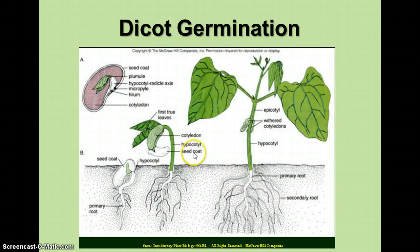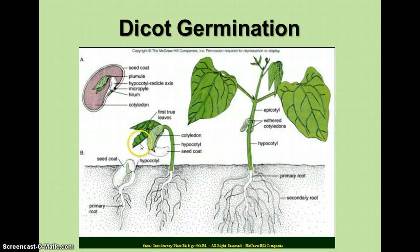In dicot germination, it's a little different. The dicot embryo has two seed leaves. The cotyledon is the large part of the seed — this is showing a bean seed. When it breaks out of the seed coat, you see the seed coat left in the ground, and then the cotyledons are here nourishing the first true leaves of the plant.